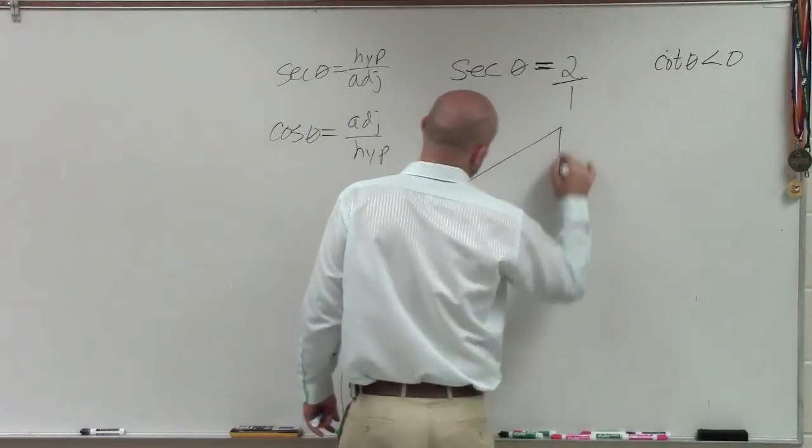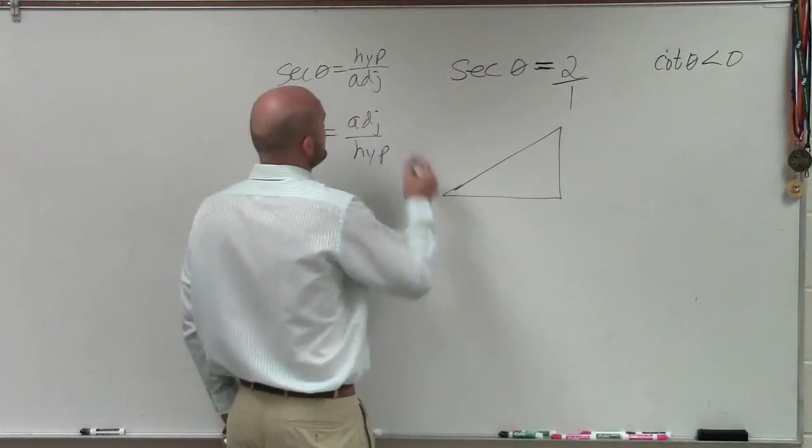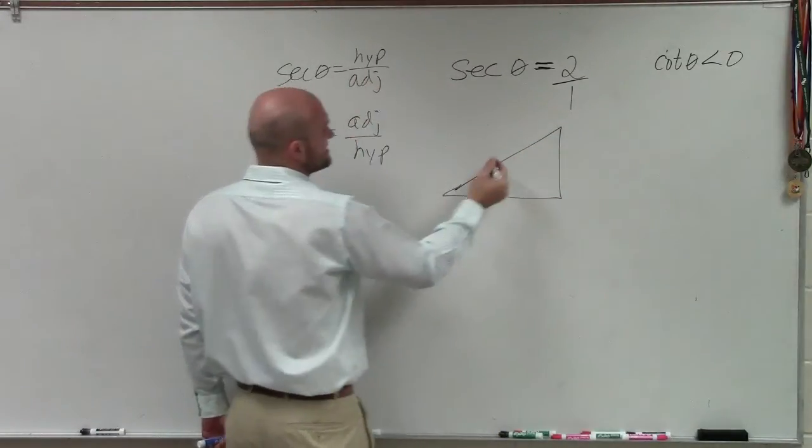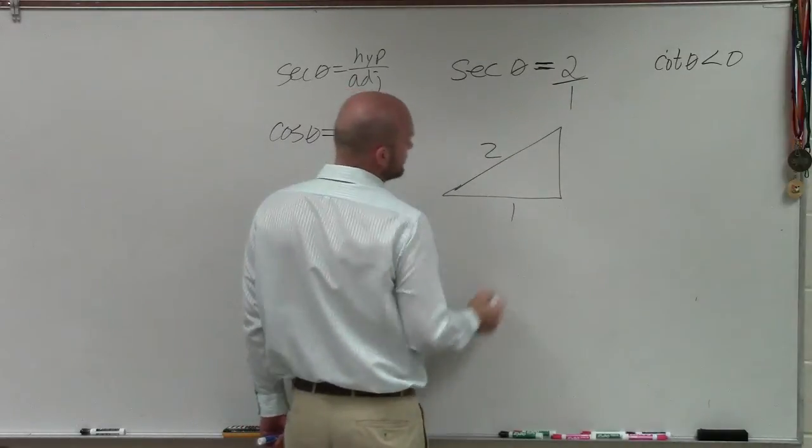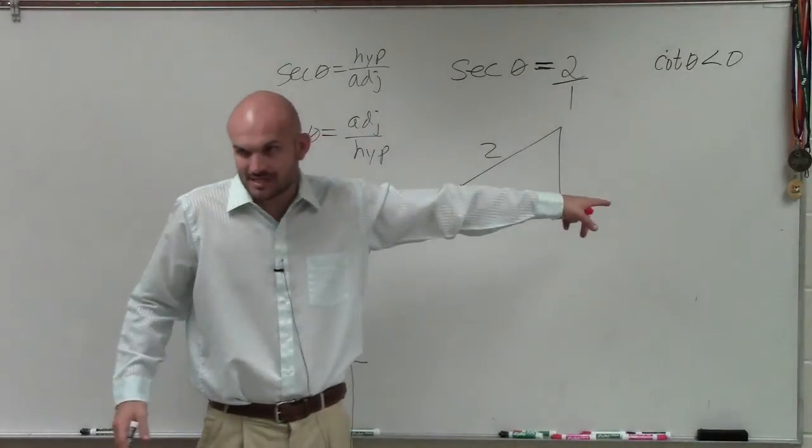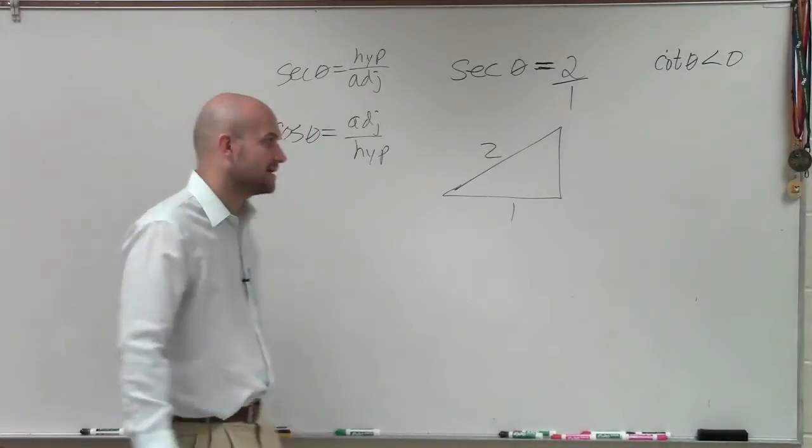So everybody usually gets to this point, and they do all right. They say, OK, secant, that's hypotenuse over my adjacent, which is 1. Very good. Now, can we figure out what this third side is? Yeah, of course we can, right?